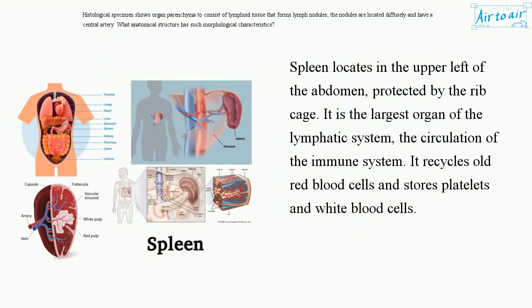Spleen is located in the upper left of the abdomen, protected by the rib cage. It is the largest organ of the lymphatic system and the circulation of the immune system. It recycles old red blood cells and stores platelets and white blood cells.